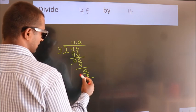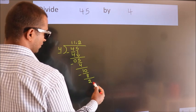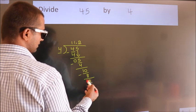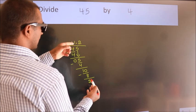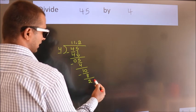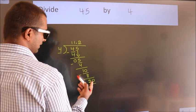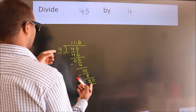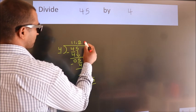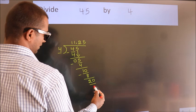Now we subtract. We get 2. After this, we already have the decimal, so we can directly take 0, so 20. When do we get 20? In the 4 table: 4 5s, 20.